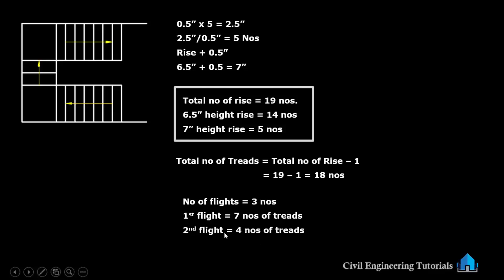Second flight has 4 numbers of treads: 1, 2, 3, 4 — this is the second flight. Third flight again has 7 numbers of treads: 1, 2, 3, 4, 5, 6, 7 — 7 numbers of treads. Total 18 numbers of treads.